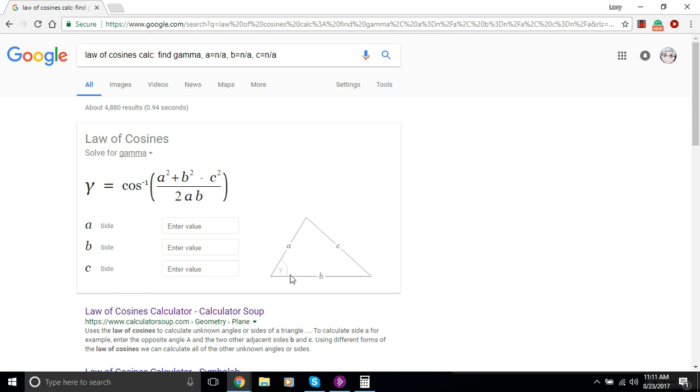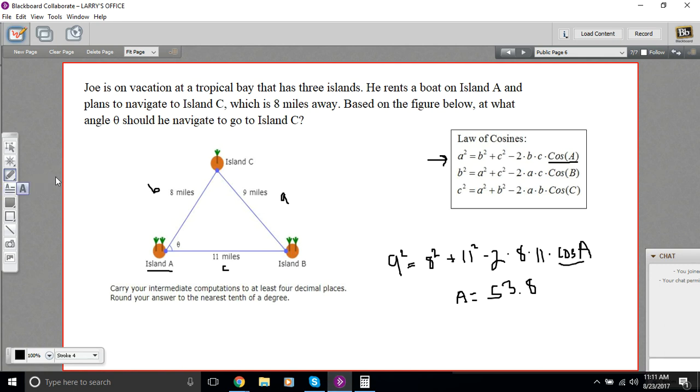But the sides aren't labeled the same way as in our diagram. So we need to be careful about that. We're looking for this angle here. And they're calling this side A, this side B, and this side C. So let's go back to our diagram and relabel. So this was A, and this was B, and this was C. I'm pretty sure.